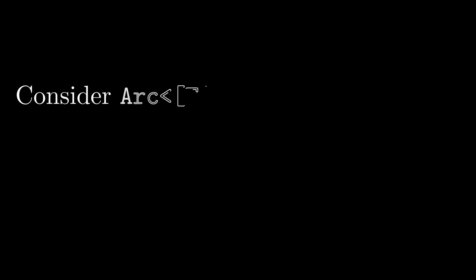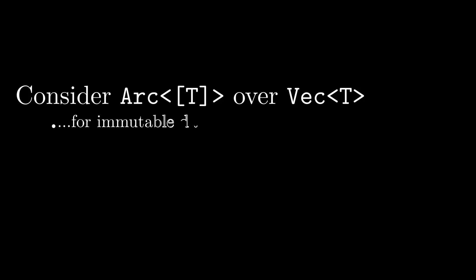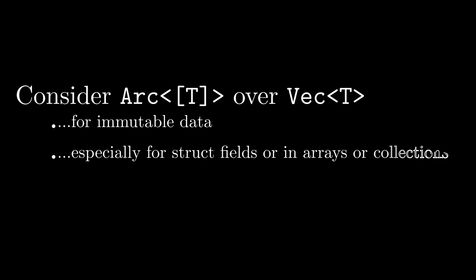In this video I want to talk about why you might consider using Arc<slice<T>> instead of Vec<T> as a reasonable default in your Rust code. This is a little bit of a hot take, so let me qualify it: Arc<slice<T>> can be a really good choice over Vec<T> for immutable data. If you build up a big sequence of data that you then never modify again, you might consider Arc<slice<T>>.